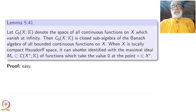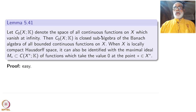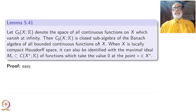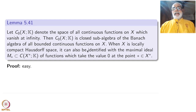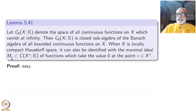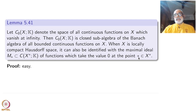Let C₀(X,k) denote the space of all continuous functions on X which vanish at infinity. Then C₀(X,k) is a closed subalgebra of the Banach algebra of all bounded continuous functions on X. When X is locally compact Hausdorff, it can also be identified with the maximal ideal M_* — all those functions which take value 0 at the point star, which is the point at infinity.